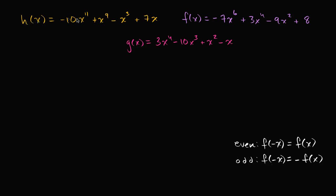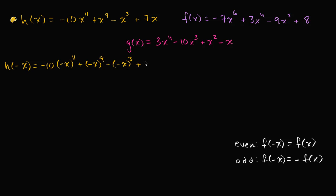So let's test this. Let's first look at h of x. Pause the video and see if you can work through this before I do. Let's see what happens if I try to evaluate h of negative x. It's going to be negative 10 times negative x to the 11th power, plus negative x to the 9th power, minus negative x to the 3rd power, plus 7 times negative x. What is that going to be equal to?